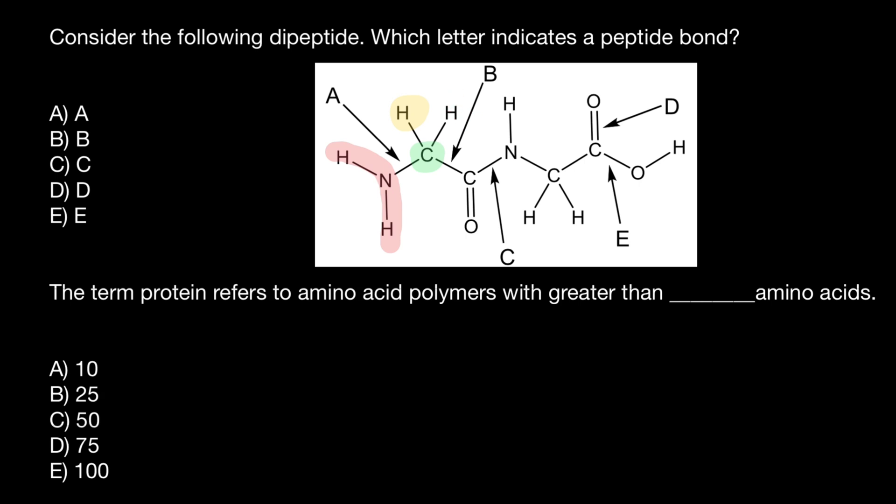And this hydrogen is going to be our R group. Because this is also hydrogen, we are going to have glycine here. And the last group of the first amino acid is going to be the carboxylic group, which is here.